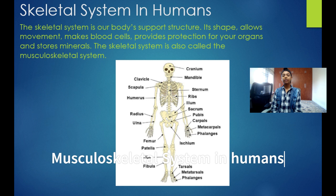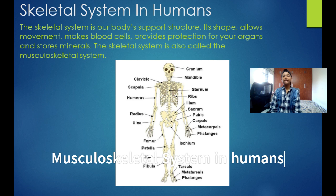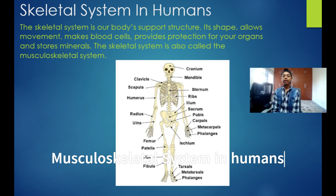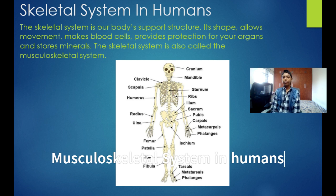The skeletal system in a body mainly gives shape, allows movement, and also makes blood cells — RBCs (red blood cells or erythrocytes) and WBCs (white blood cells or leukocytes). It also provides protection for our body organs; for example, the skull protects our brain, the rib cage protects our lungs and heart, and it also stores minerals.